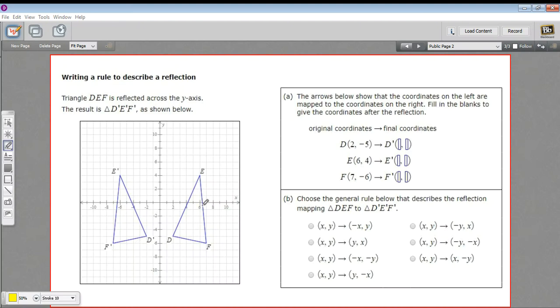In this problem, we have a reflection. Triangle EDF has been reflected over the y-axis. This is our line of reflection here. The image it creates is triangle D prime, E prime, F prime. Our job is to come up with a rule that describes this reflection.